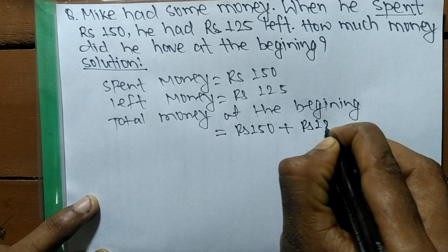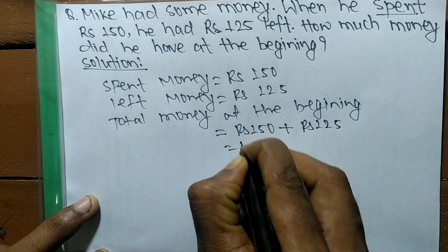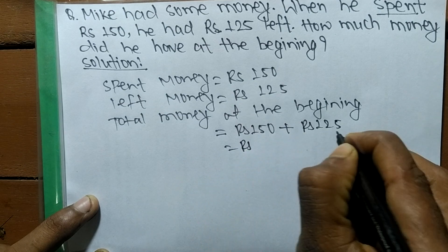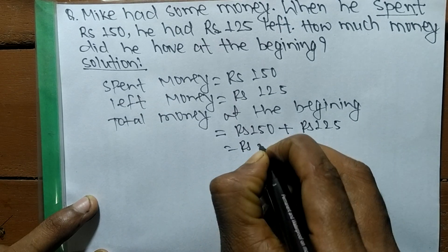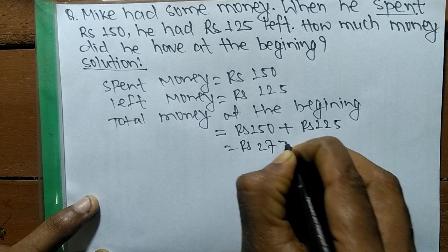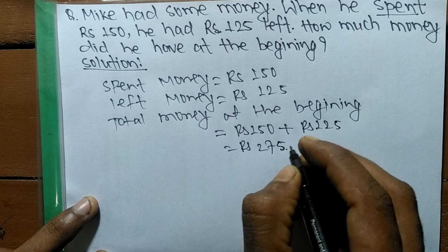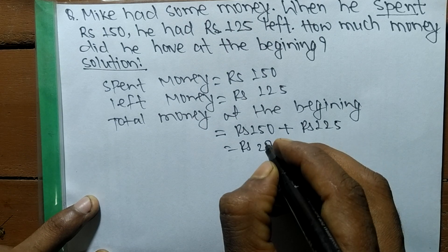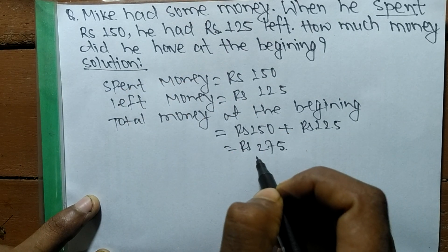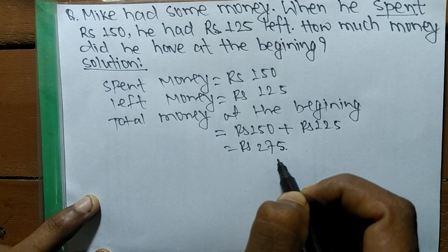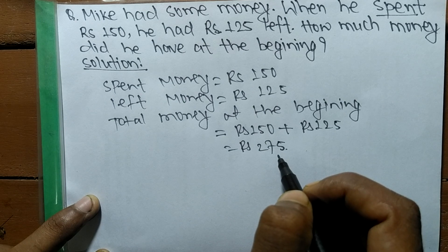Adding both amounts — RG 150 and RG 125 — we get 275. So at the beginning, Mike had a total of 275 rupees.